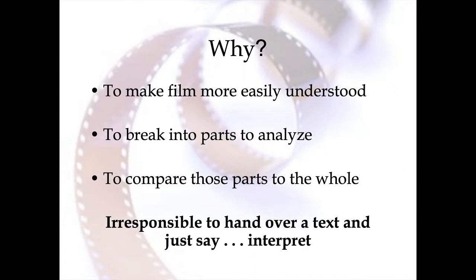So why do we do this? We use the structure because we want film to be more easily understood. We want to be able to take a very dense text — a movie that has so many moving parts — and break it down into smaller, more digestible chunks to look at. We might analyze each level for what it is and how it's similar to literature, then the visual elements, then the cinematic choices. It would be pretty irresponsible to hand over a movie and just say, figure it out.